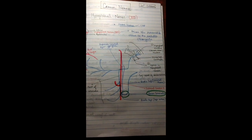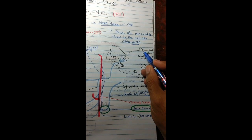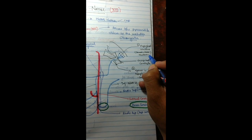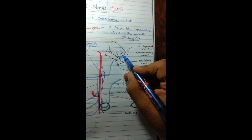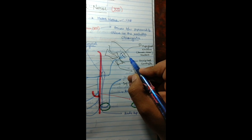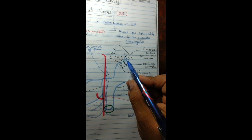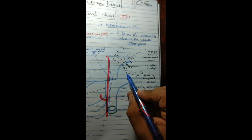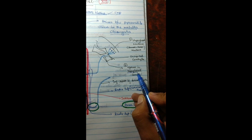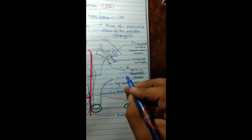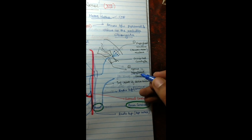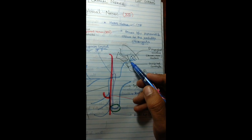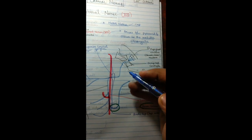The path of the hypoglossal nerve: first, it arises in the medulla oblongata from the hypoglossal nucleus, also known as the somatic motor nucleus. From here it goes to the hypoglossal canal in the occipital condyle. As you can see here, the hypoglossal nerve passes through the hypoglossal canal in the part of the brain known as the occipital condyle.